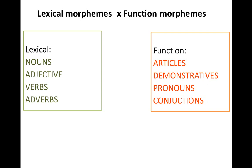In the lexical morpheme group we have nouns, adjectives, verbs, and adverbs. In the function morpheme group we have articles, demonstrative pronouns, and conjunctions. The lexical group is richer in semantics and meaning.